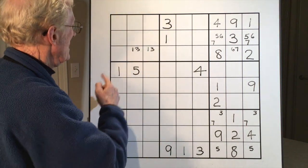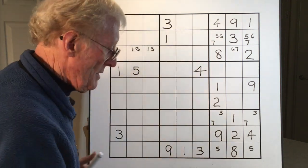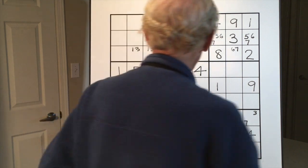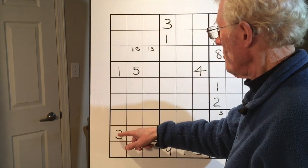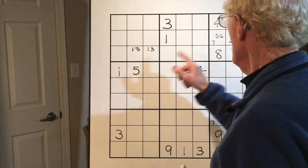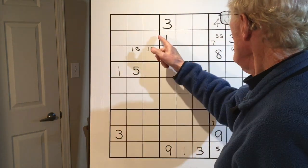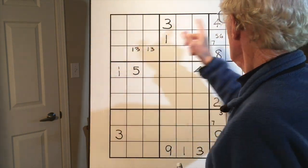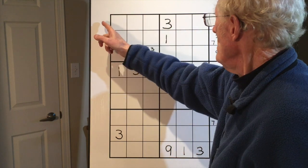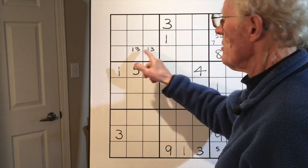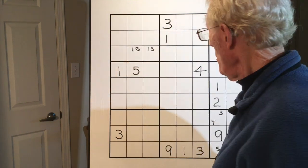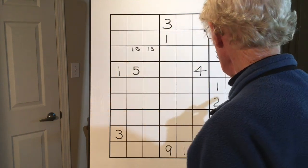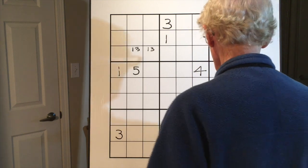3-1. So in summary, when you've got 3-1, 3-1, 3-1, that has to be a matching pair. Now let's go over to this side here.